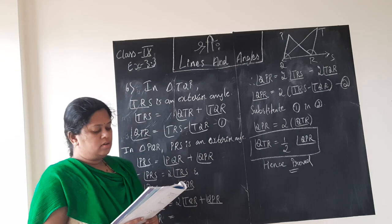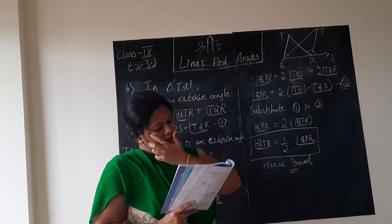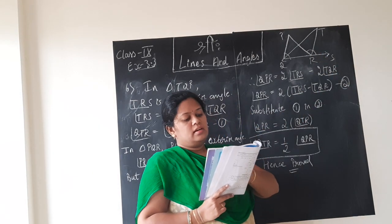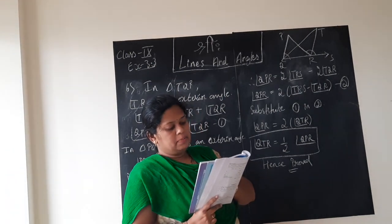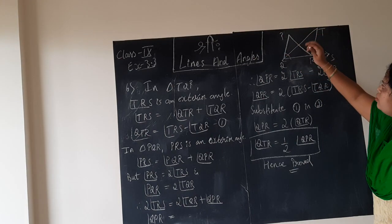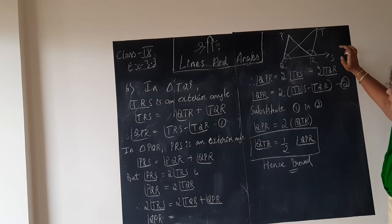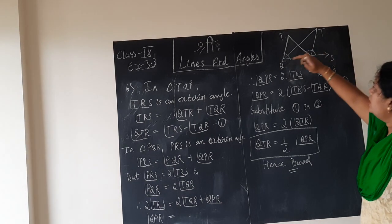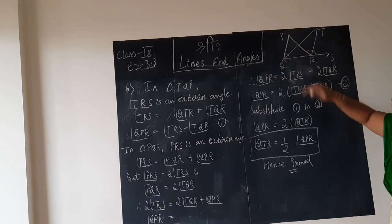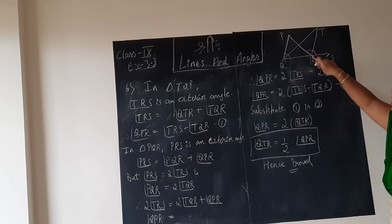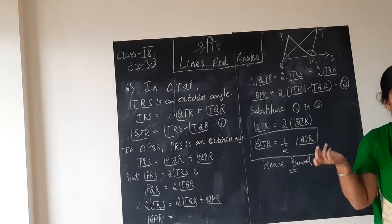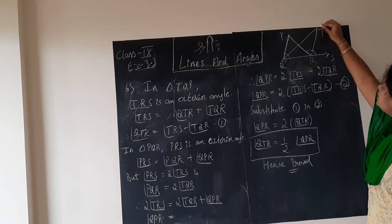Sixth problem, children. In the figure, side QR of triangle PQR is produced to point S. The bisectors of angle PQR and angle PRS meet at point T. We need to prove that angle QTR is half of angle QPR. We have triangle PQR, side QR produced up to point S. For angle PQR there is a bisector, and for angle PRS there is also a bisector. Those two bisectors divide angle Q and angle R into two equal halves, and those bisectors meet at point T.